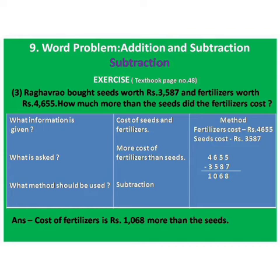Make three columns. In the first column write questions. In the middle column write answers. And in the last column do the method. What information is given? Ka information dilelie? Cost of seeds and fertilizers. What is asked? Ka ii chare le? More cost of fertilizers than seeds. What method should be used? Subtraction.